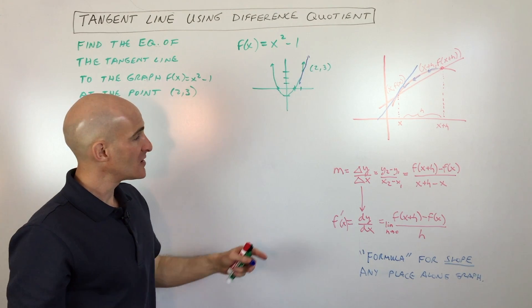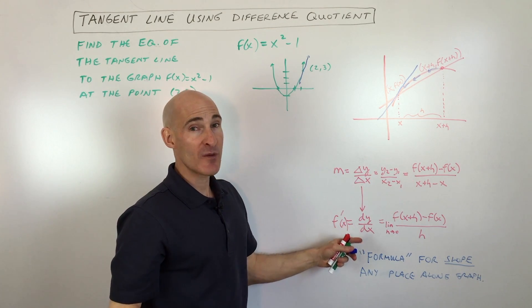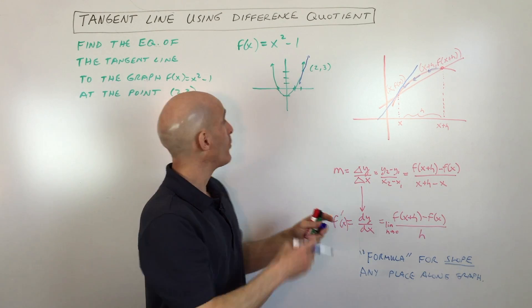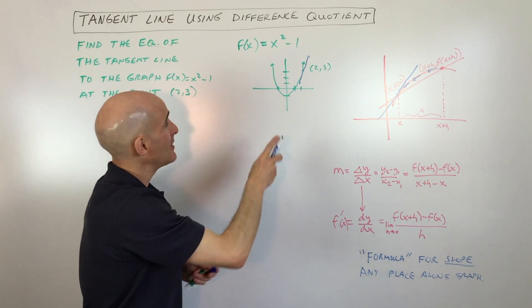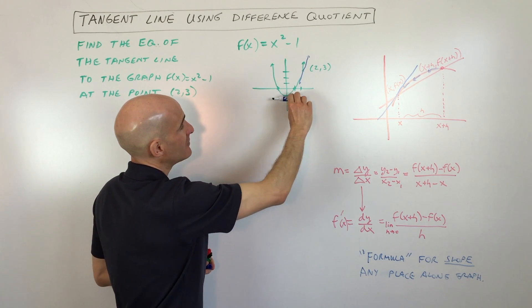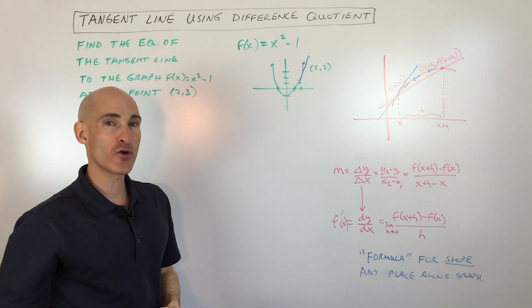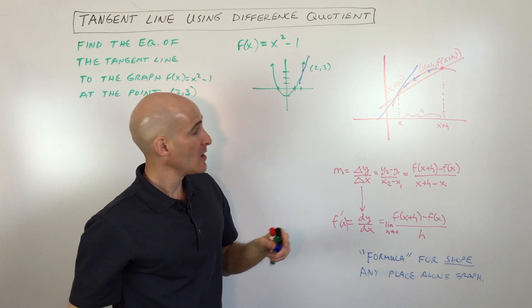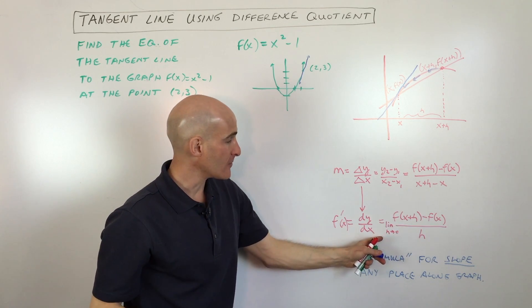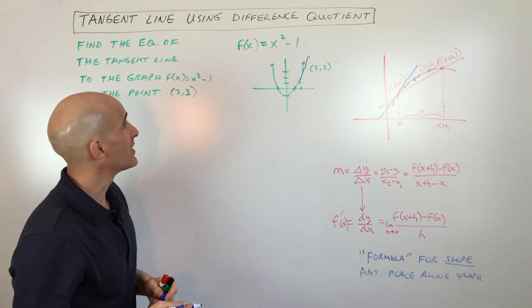So what we're going to do is we're going to use the difference quotient to find the derivative, and remember the derivative really represents the slope anywhere along this graph. Keep in mind that over here the slope is negative, here it's zero, here it's positive, here it's even more positive. So we want to find a formula that will allow us to find the slope at this point.